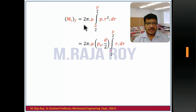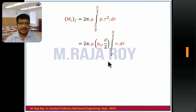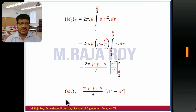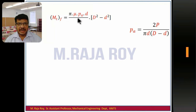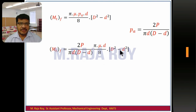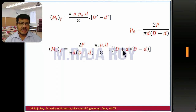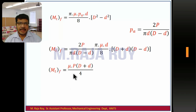For torque transmitting capacity in uniform wear theory, in the torque equation we have p·r² inside the integral. Taking p·r out as the constant p_a · (d/2), one more r remains inside the integration. Integrating and simplifying gives the torque equation. Further substituting the p_a value from the rearranged operating force equation, and noting that (D² - d²) = (D+d)(D-d), after cancellation the final torque transmitting capacity equation under uniform wear criteria is obtained.